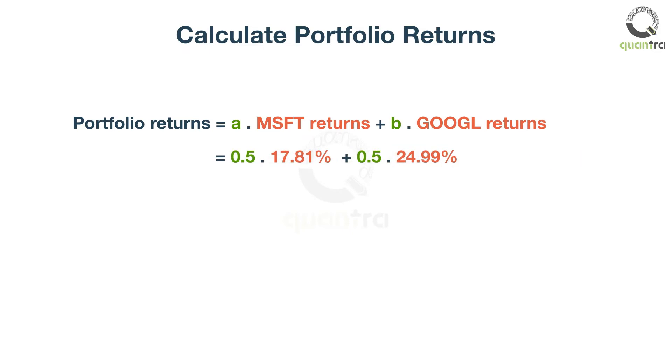For simplicity, we have allocated equal weights to both the stocks. The portfolio returns come out to 21.4%.